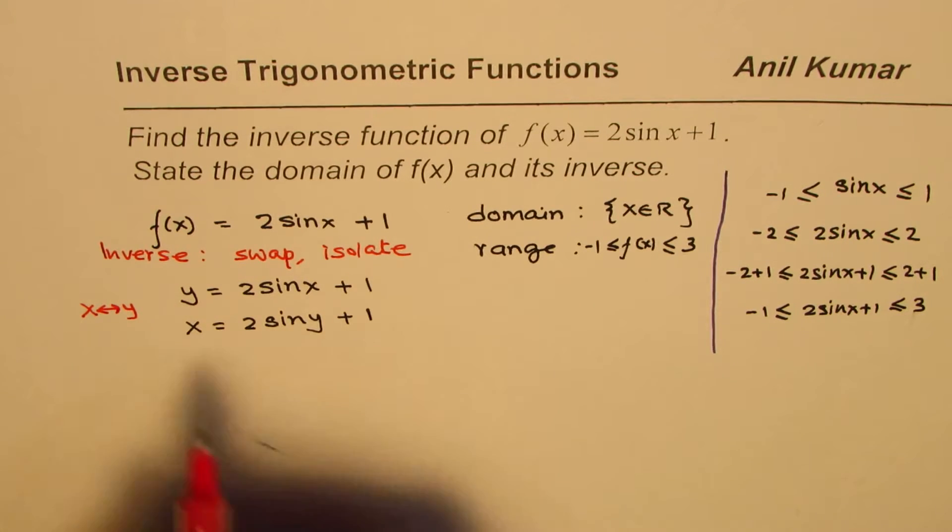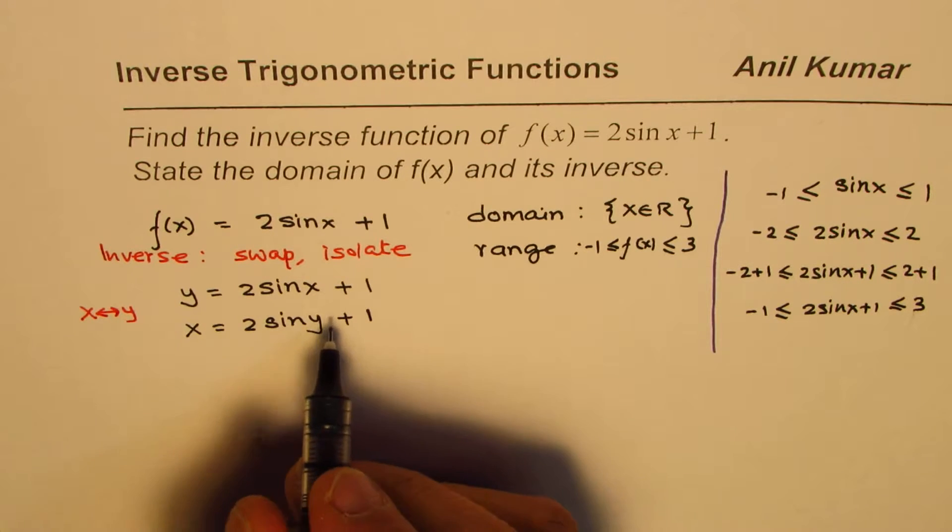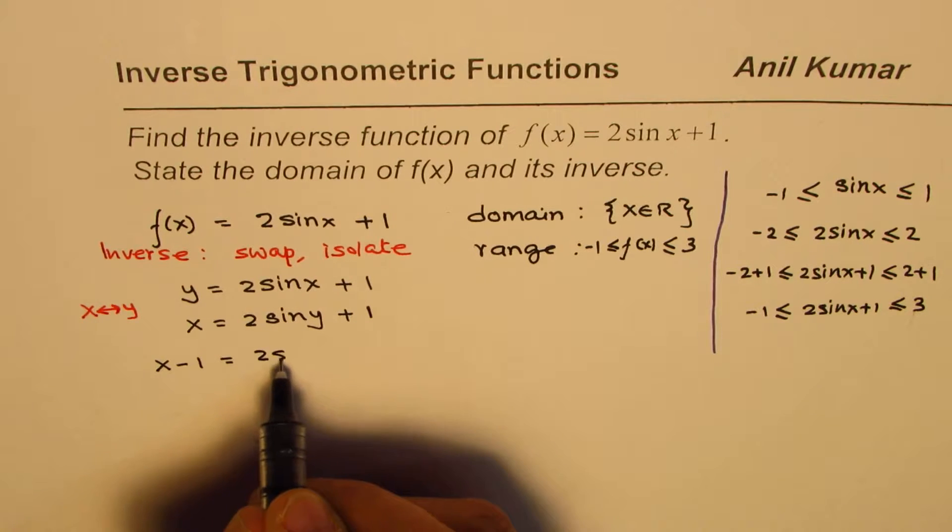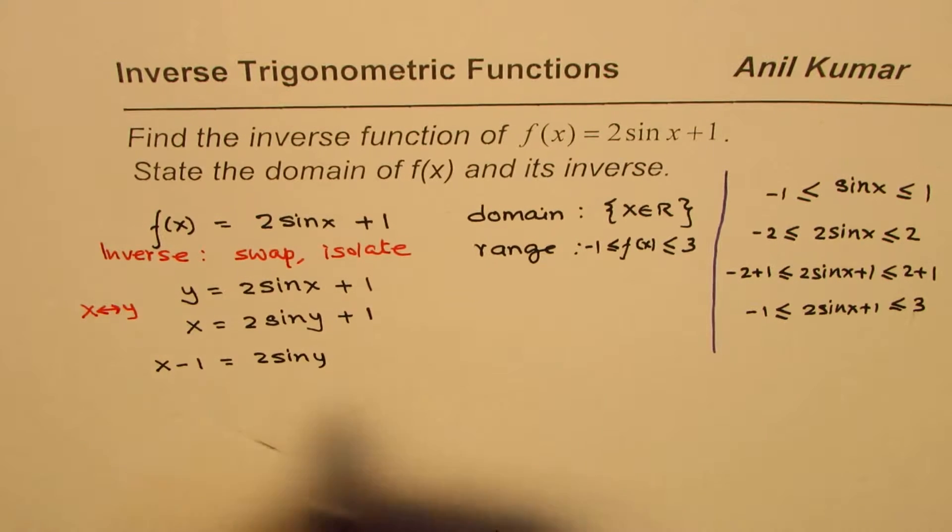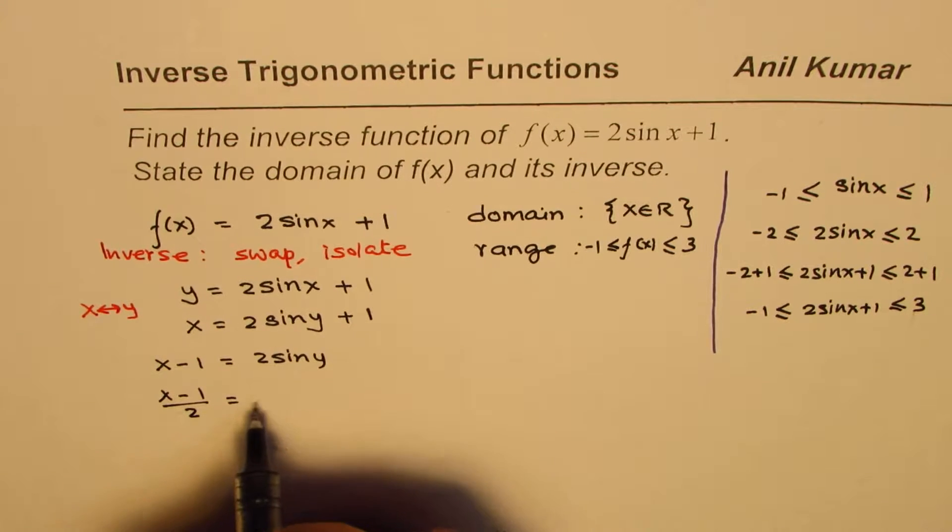That is the first step where what we did was we replaced x with y. And now, we'll isolate y. So, to isolate y, we can say x - 1 = 2sin(y).